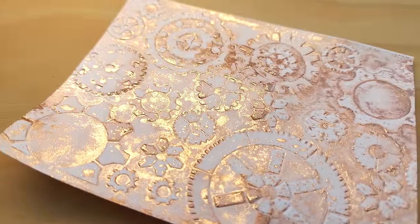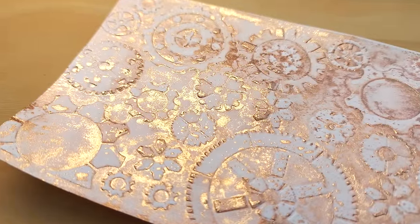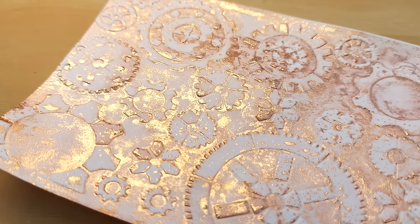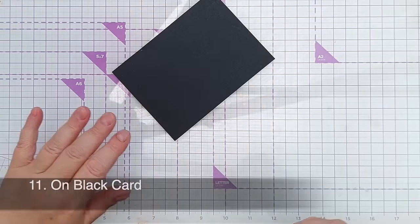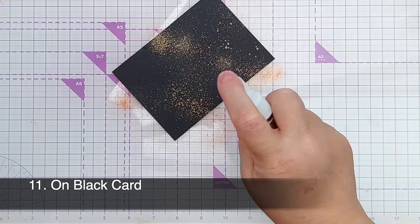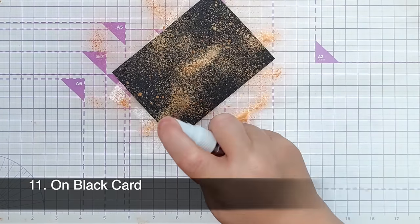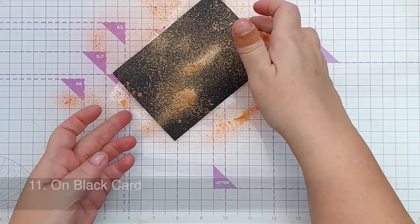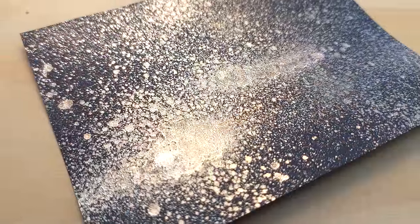For technique number eleven I spritzed the spray on some black card. These kind of shimmer sprays—I'm not sure if all of them work like this but the ones I've tried certainly do—if you spray them on black card you get the color and the shimmer and they look beautiful.